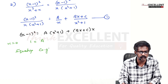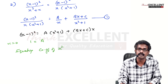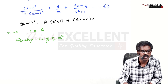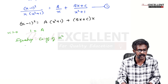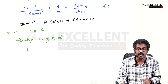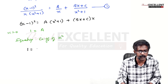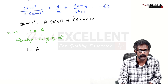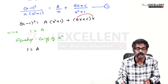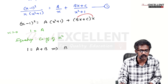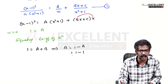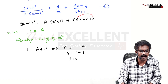Equate the coefficients of the highest power x². Left side: expanding (x-1)², the x² coefficient is 1. Right side: from A(x²+1) the coefficient is A, and from (Bx+C)(x), multiplying Bx by x gives Bx², so coefficient is B. Therefore 1 = A + B, and B = 1 - A = 1 - 1 = 0.